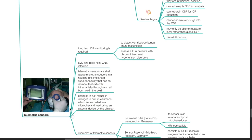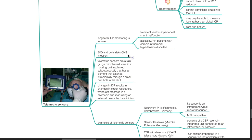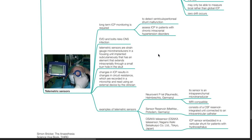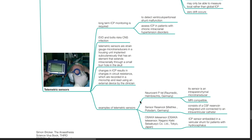Telemetric sensors. Long-term ICP monitoring is required to detect VP shunt malfunction and assess ICP in patients with chronic intracranial hypertension disorders. EVD and BOTS risk CNS infection. Telemetric sensors are strain gauge microtransducers in a housing unit implanted subcutaneously that has an element that extends intracranially through a small burr hole in the skull. Changes in ICP result in changes in circuit resistance which are recorded in a microchip and read using an external device by the clinician. Examples of telemetric sensors include the NeuroVent PTEL Sensor Reservoir and Osaka Telesensor.